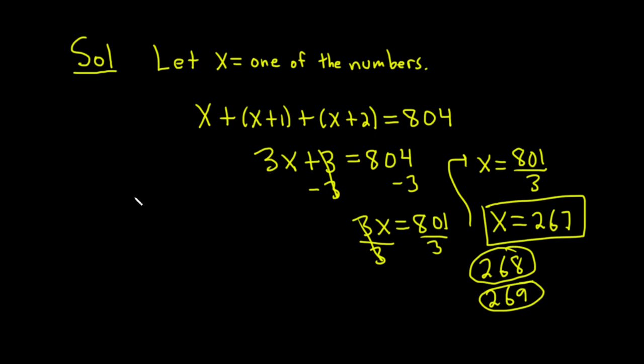Of course, you can check your answer, and you probably should. If you wanted to check, you would add them up. You would take 267 plus 268 plus 269. If you add these up in your calculator, yep, it equals 804.